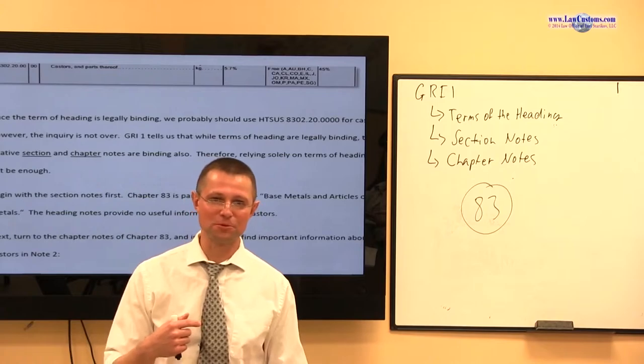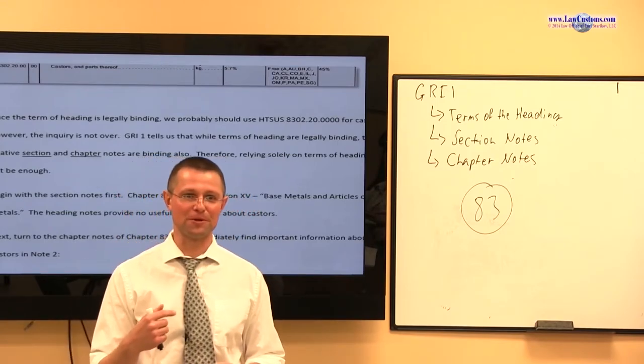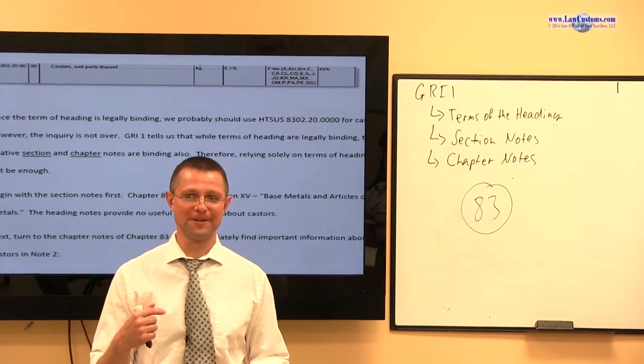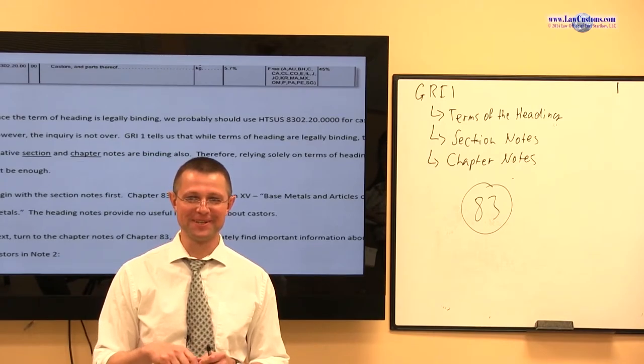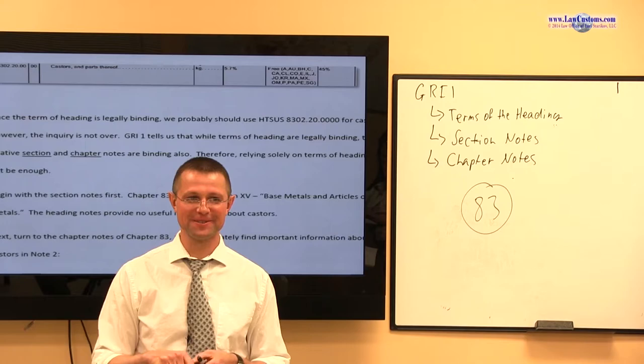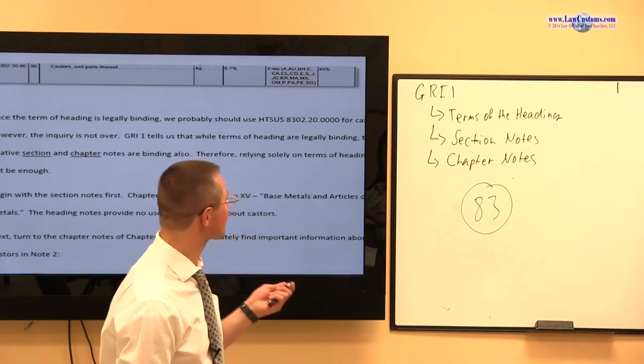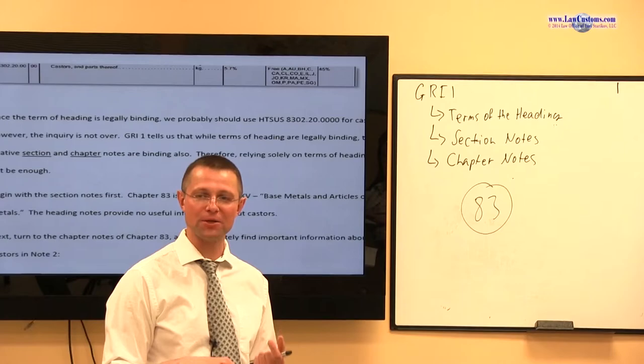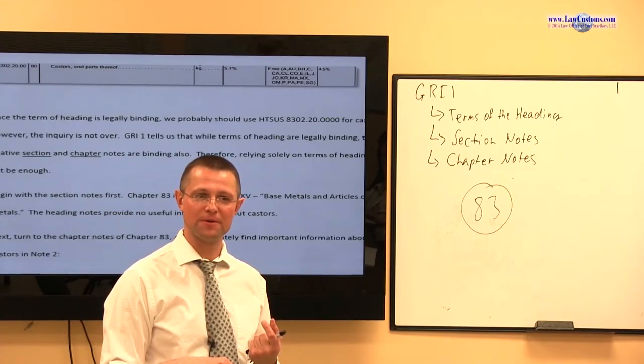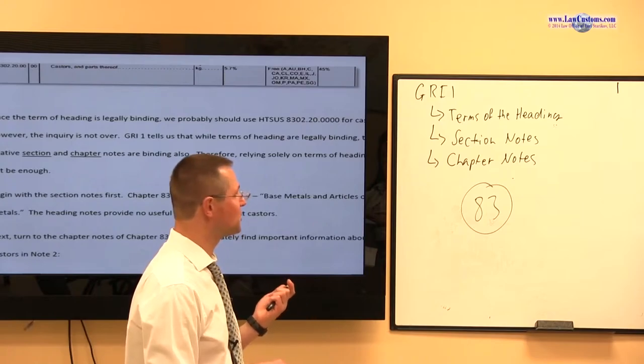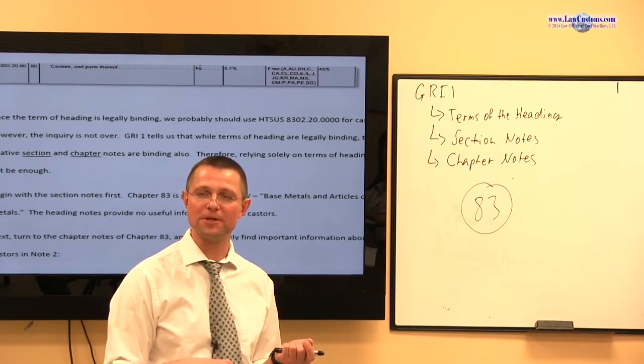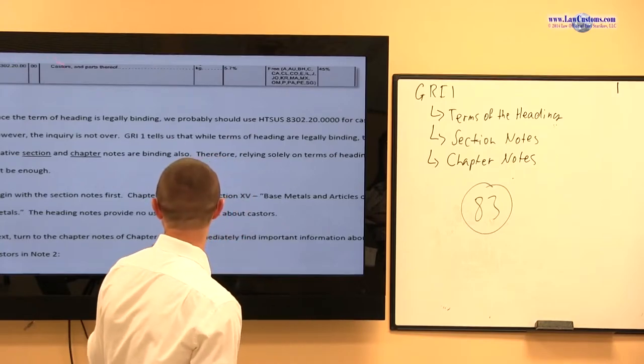No. Not right. What's wrong? Why is it not right? Any guesses? So GRI 1 includes terms of the heading, section notes, chapter notes. What have I analyzed so far? Only terms of the heading, right? Did I look at the section notes, the chapter notes? No I haven't, not yet. I look at the terms of the heading.